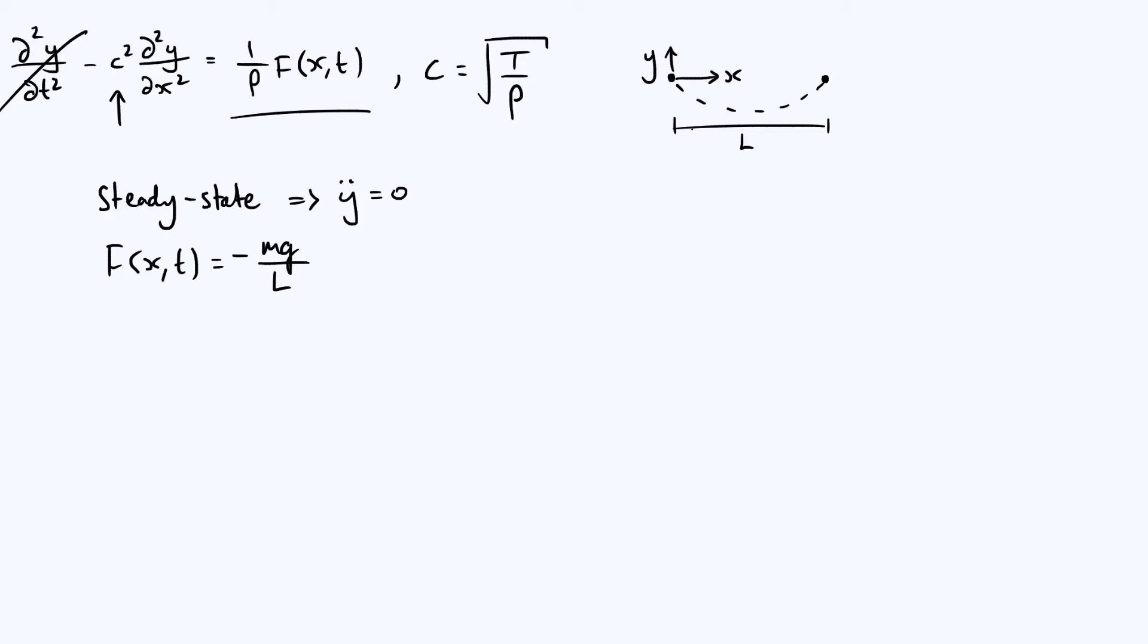I should also put a minus sign here because I defined y to be pointing upwards, but gravity is pointing downwards. But then in that fraction, you've got m divided by L, mass per unit length, which is just the density, linear density rho. So that simplifies nicely to minus rho g. And so if we write out our full wave equation under these assumptions, you get minus c squared times the second spatial derivative of y is equal to just minus g, because you take minus rho g, and then you divide it by rho. So we've just got to solve this differential equation. Fortunately, that's pretty easy to solve.